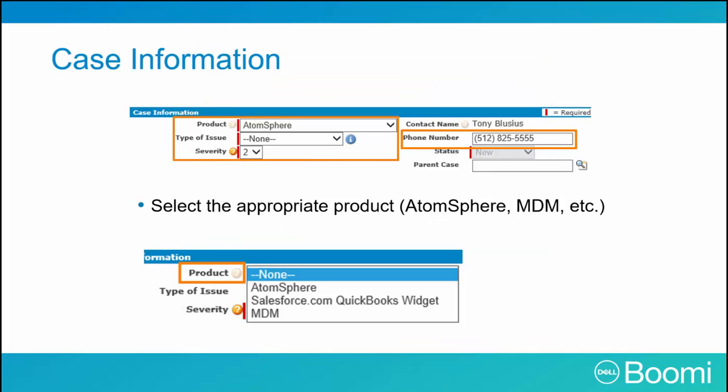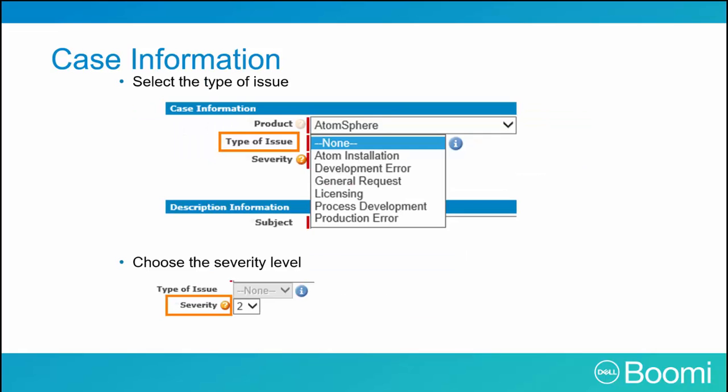The first section is the case information. On the right side, make sure your contact number is correct so our support team can contact you. You then need to select the product you wish to create the case for — either Atmosphere, Salesforce QuickBooks widget, or MDM. Next, select the issue type, which allows our support team to narrow the issue. Once the issue type is selected, the severity will be chosen. Most customers leave the severity set at 2.